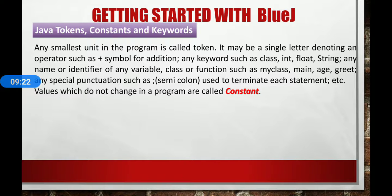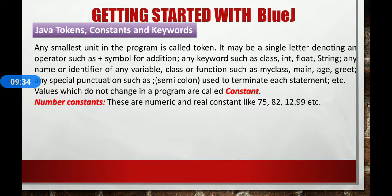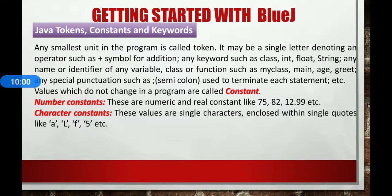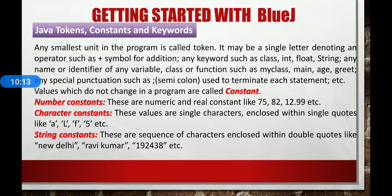Now, what is a constant in Java? A value that does not change in a program is called a constant. There are three types of constants available in Java. Number constants — they are numeric and real constants like 75, 85, 78.09, 12.99, etc. Character constants — these values are single characters enclosed within single quotes, like 'A', 'L', 'F', '5', etc. Note that a single digit within single quotes is also a character. Next is string constant — a sequence of characters enclosed within double quotes, like "New Delhi", "Ravi Kumar", numbers in double quotes, etc. Numbers enclosed within double quotes are also treated as a string.